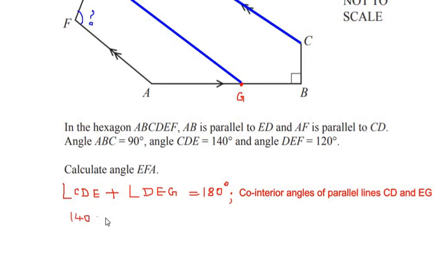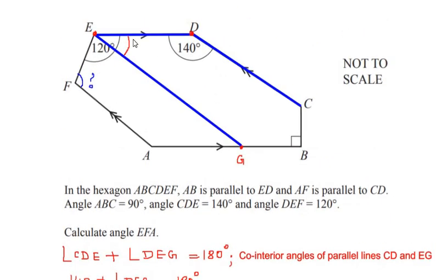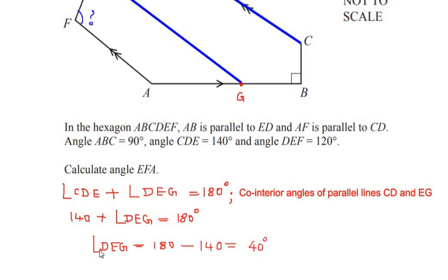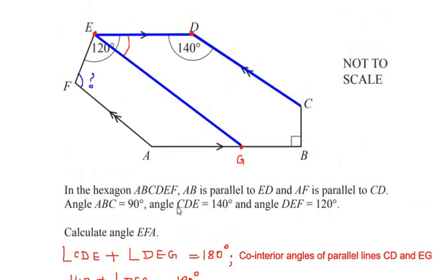Now CDE has a value of 140 degrees, so we write 140 plus angle DEG equals 180 degrees. We get angle DEG as 180 minus 140 degrees, which gives us a value of 40 degrees.